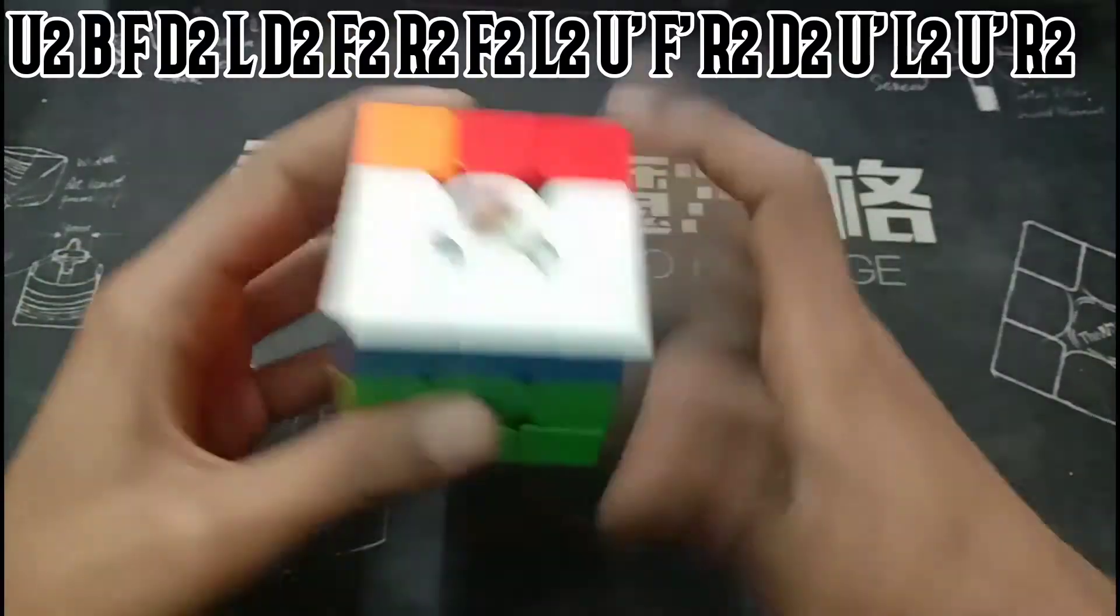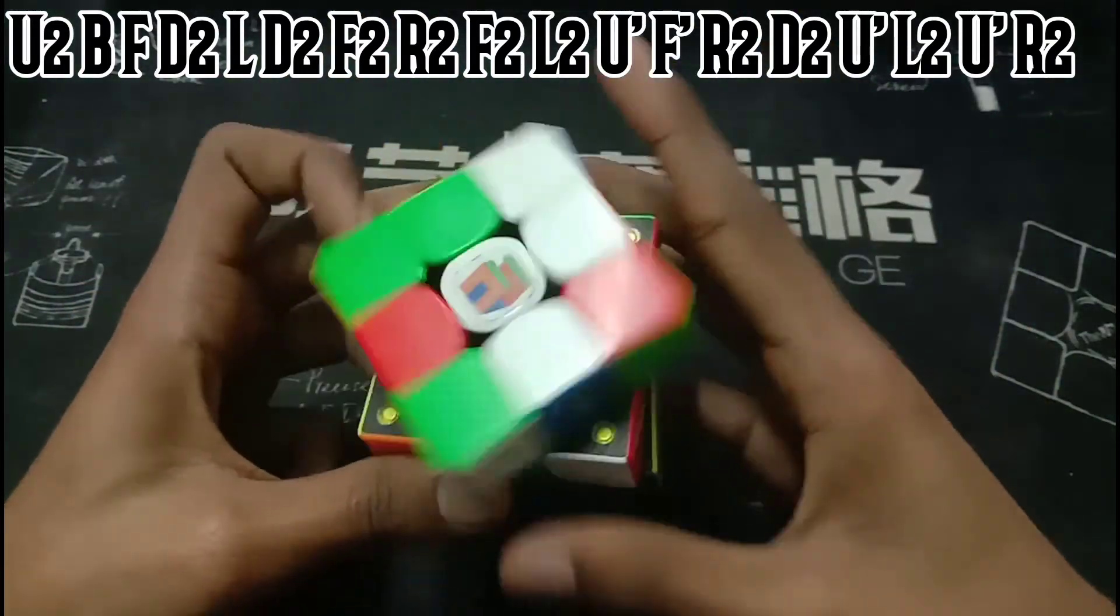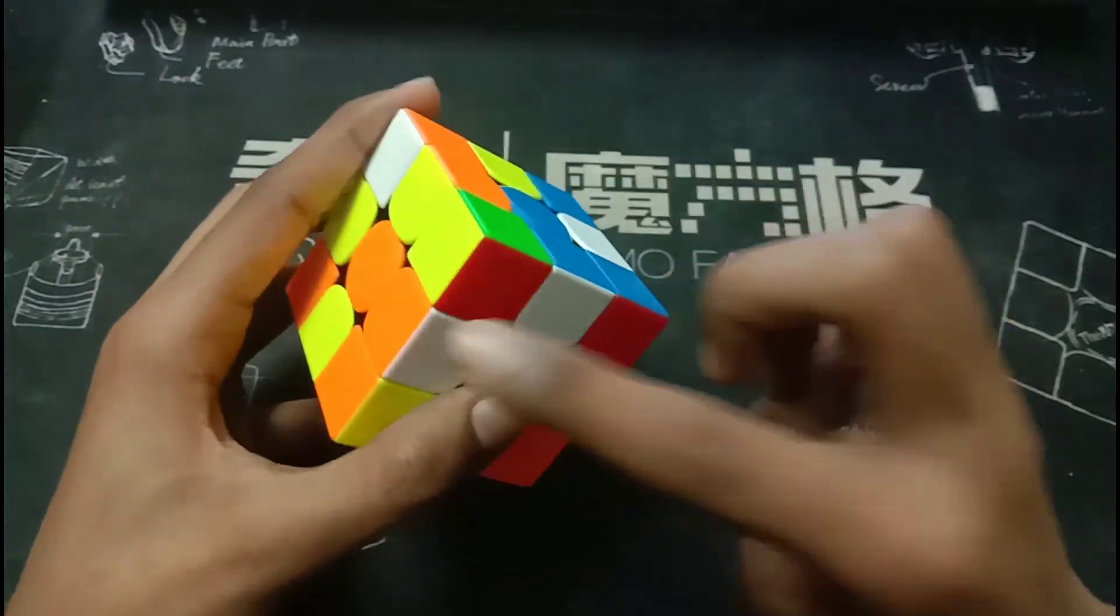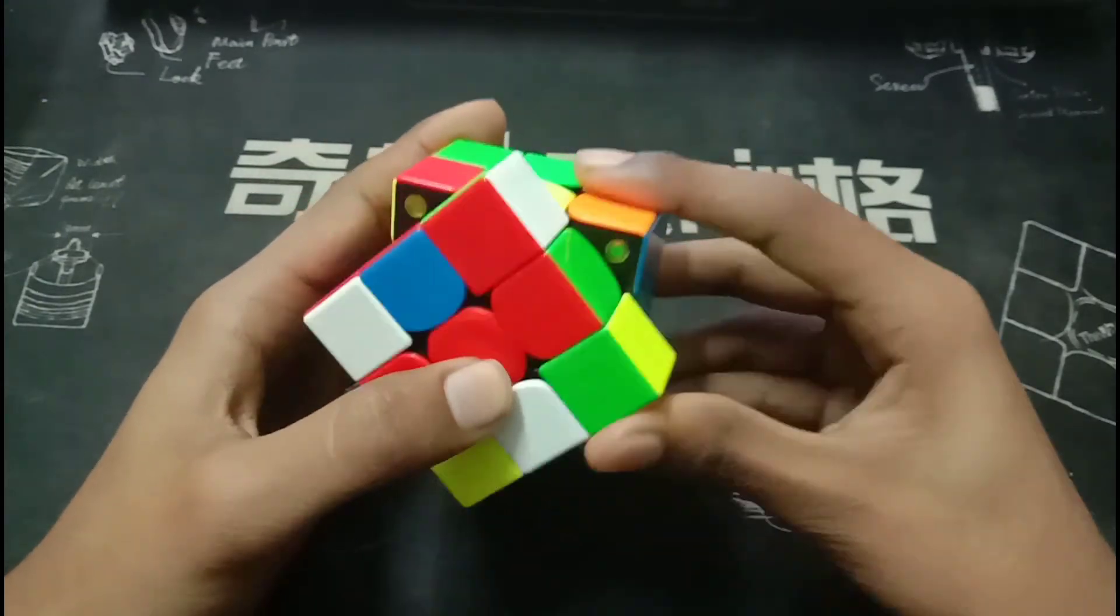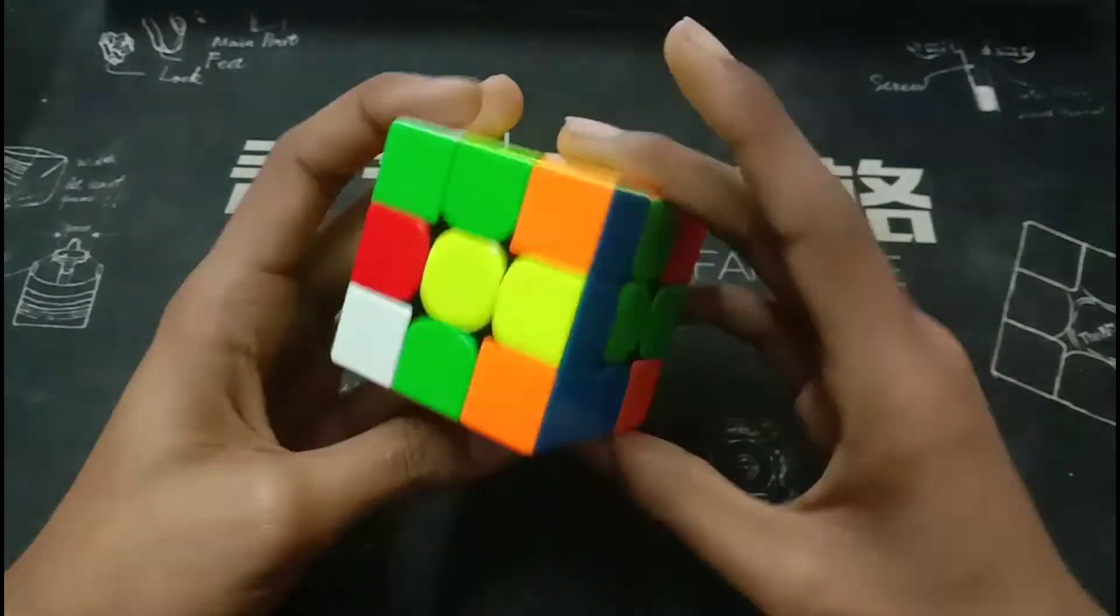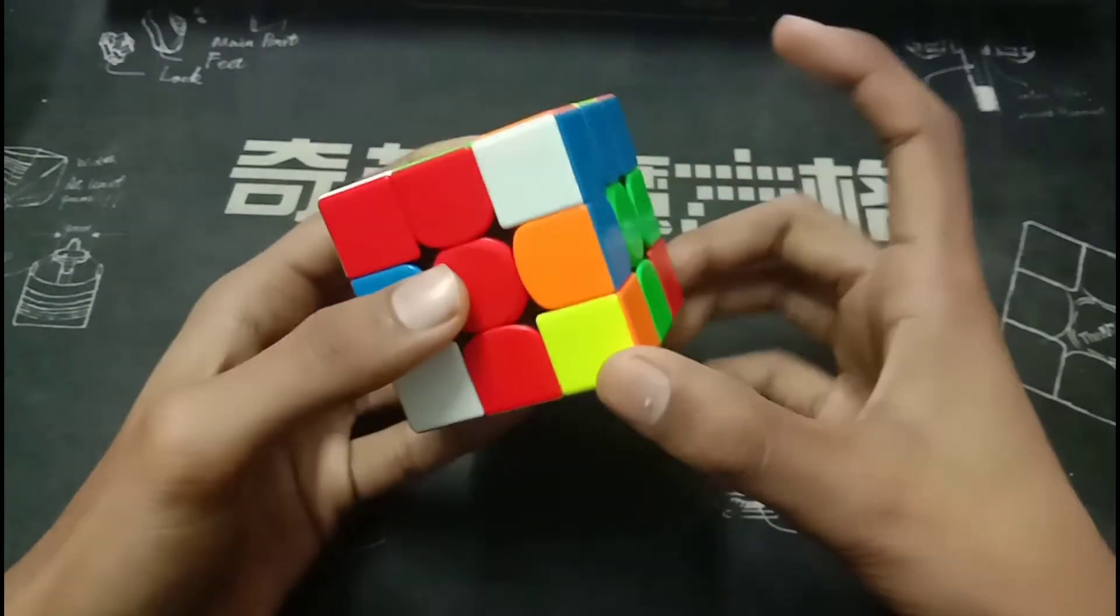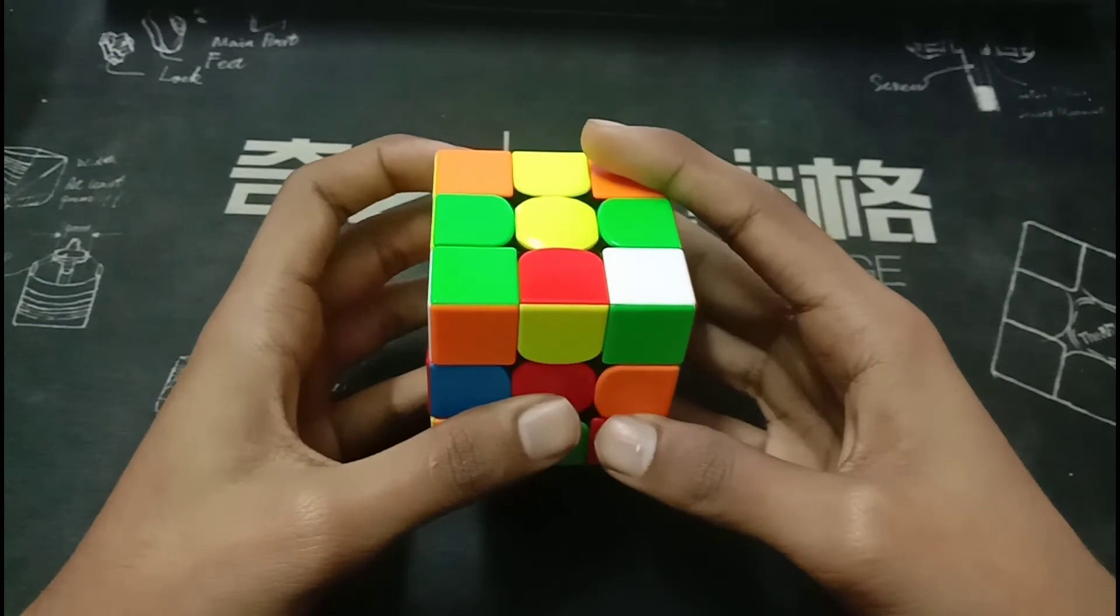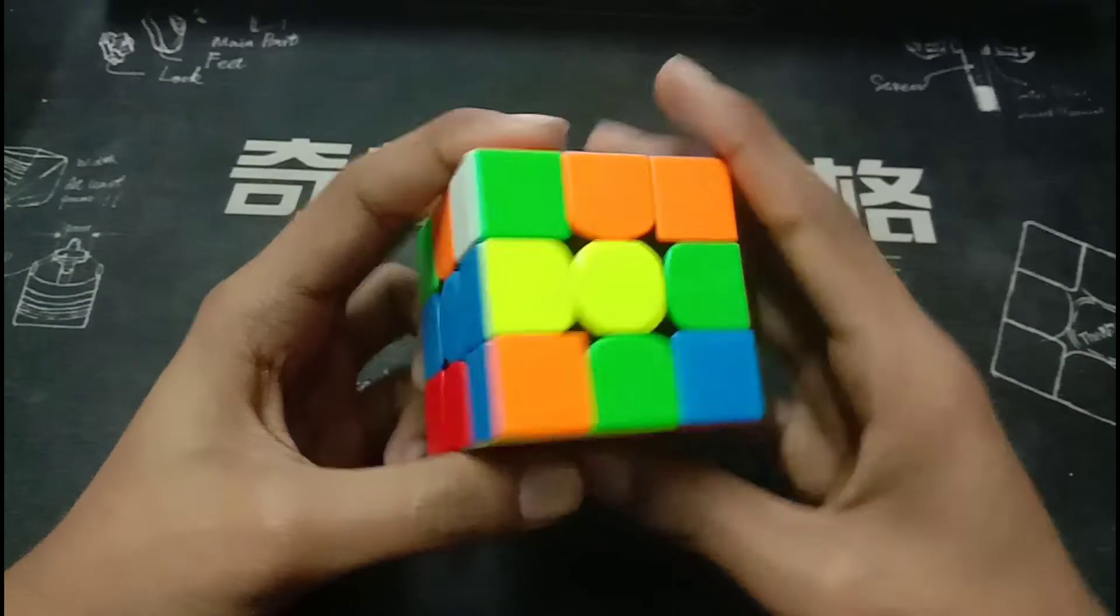Fourth solve, the scramble is on screen. Okay, so in this solve, we can directly see that the white cross is pretty easy. It can be solved in two moves. So what Felix does is he does F' R' to solve these two. And what he notices is that this edge is solved and the corner is here. So what we can do is bring the corner slot right here and then insert it into the correct spot to make the X cross in the back.